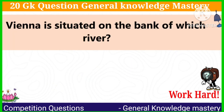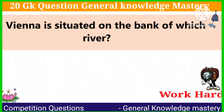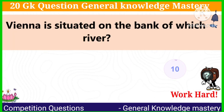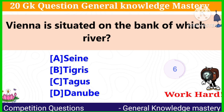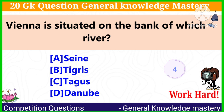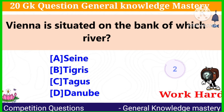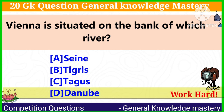Question 14: Vienna is situated on the bank of which river? The correct answer is Danube.